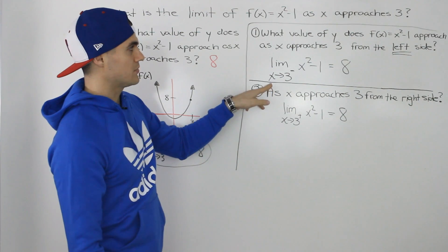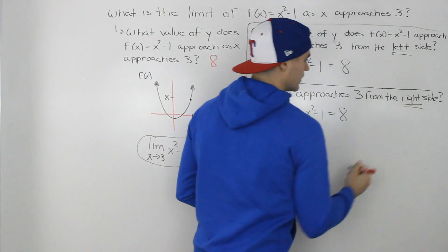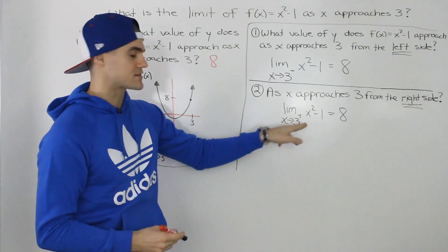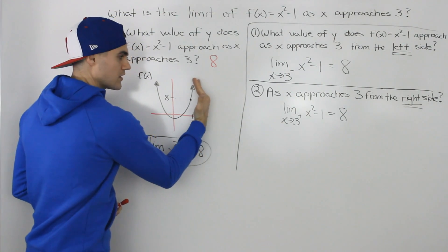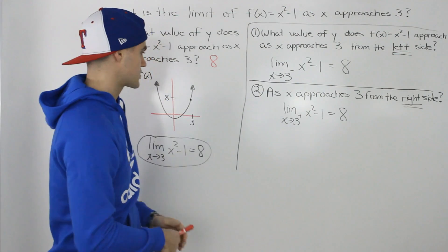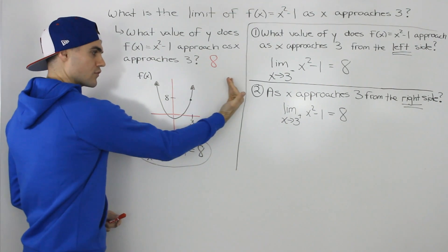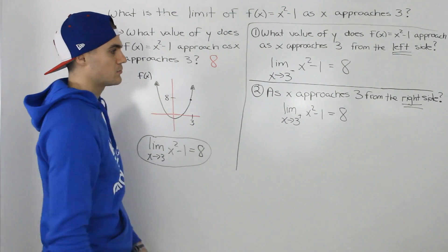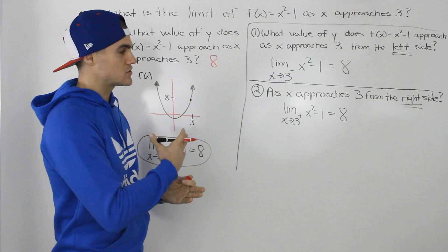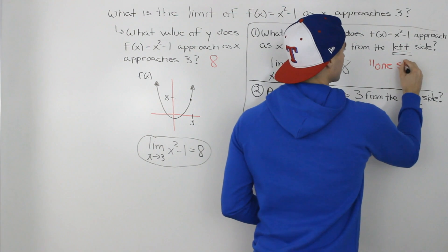Similarly, what if we're given the same question but instead of approaching three from the left side, we are now approaching it from the right side? We would rewrite the same notation, but instead of putting a negative superscript, we would now put a positive, because we're approaching the x value from the positive side. The limit as x approaches three from the positive side of x squared minus one is still equal to eight. Even if we're approaching this x value of three from the right side, the y value still approaches eight. Both of these more specific types of limits are called one-sided limits.